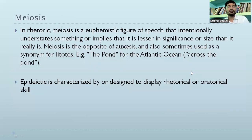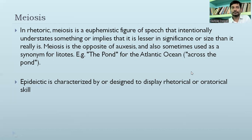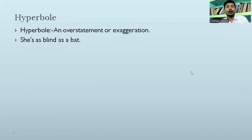Meiosis, in rhetoric, is a euphemistic figure of speech that intensely understates something or implies it is lesser in significance or size than it really is. It is the opposite of hyperbole and sometimes used synonymously with litotes. For example: 'the pond' for the Atlantic Ocean — 'across the pond.' Epideictic is characterized or designed to display rhetorical or oratorical skills. Hyperbole is an overstatement or exaggeration — like 'she is blind as a bat' — exaggerating something to a higher level.